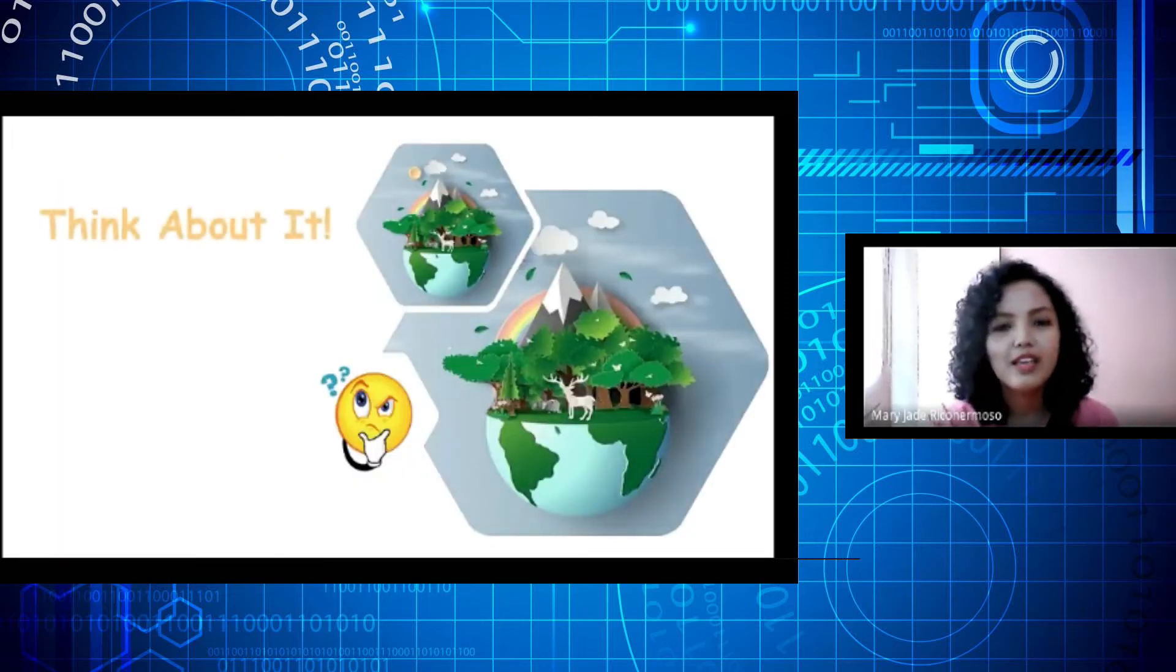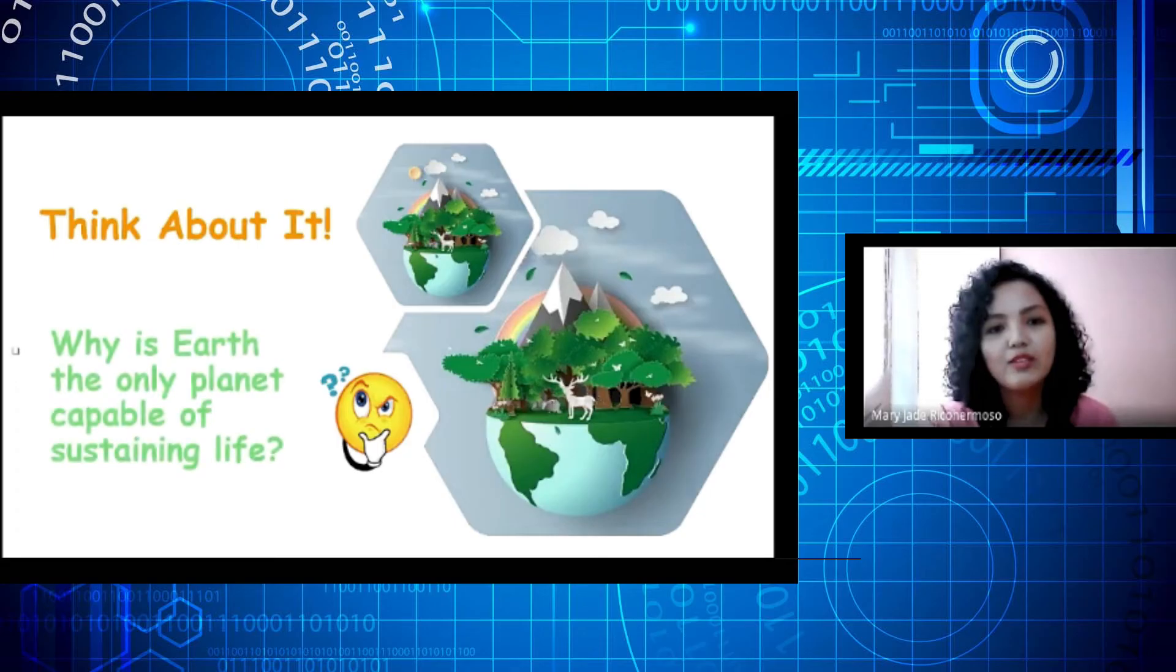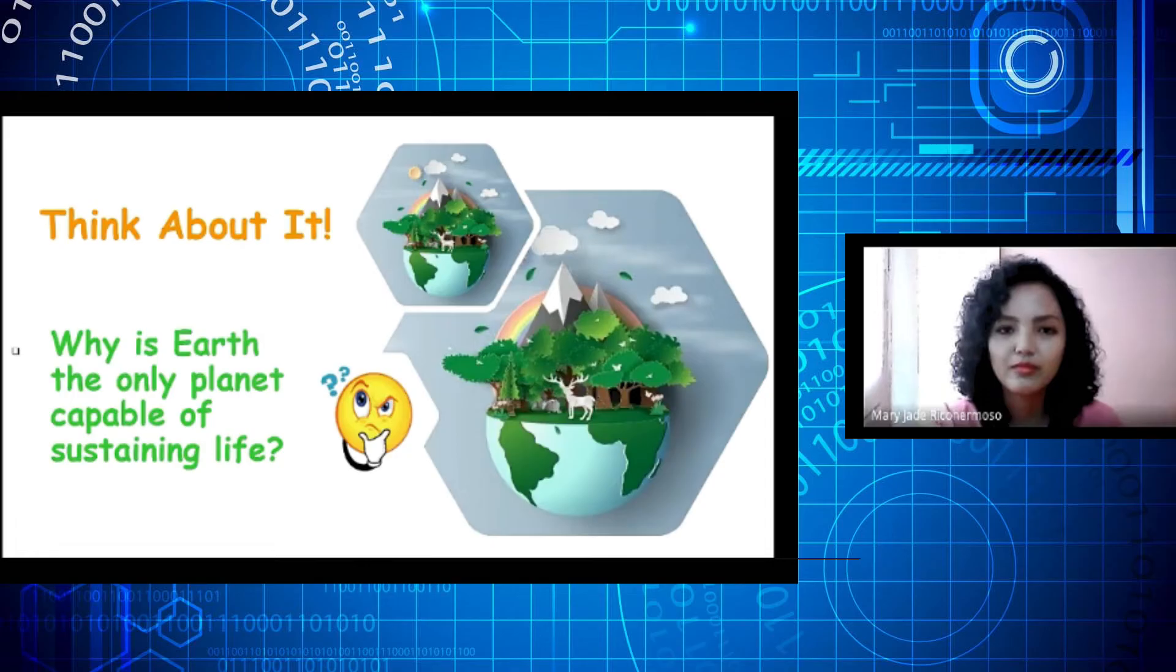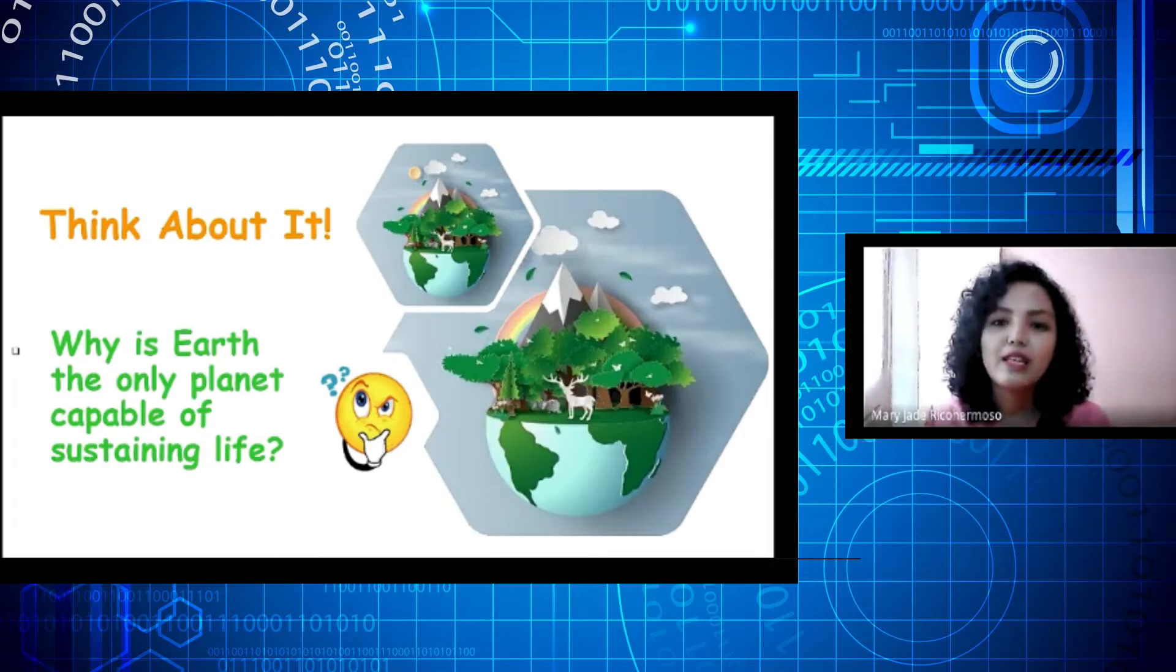Now, let's think about it. Why is Earth the only planet capable of sustaining life? Yes, very good! The atmosphere is like a warm blanket keeping the planet warm through insulation and preventing extremes between day and night temperatures. It also protects life on Earth by shielding it from incoming ultraviolet rays from the sun. We wouldn't be able to live on Earth without an atmosphere.